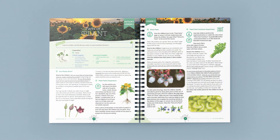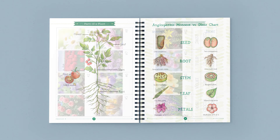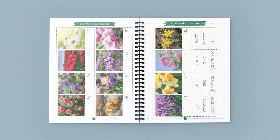The full-color coursebook contains vocabulary terms, supply lists, and 13 scripted lessons. These easy-to-teach lessons use photographs, diagrams, activities, and videos to help bring Botany to life.